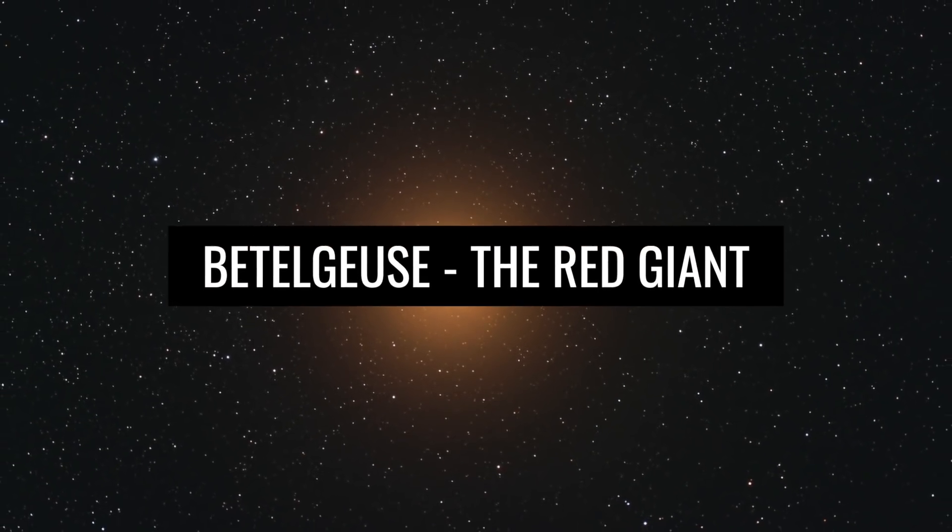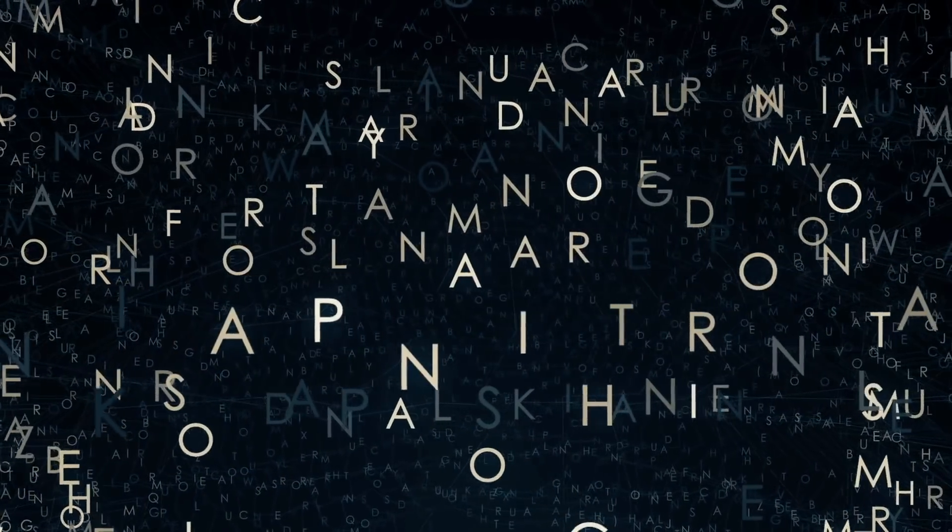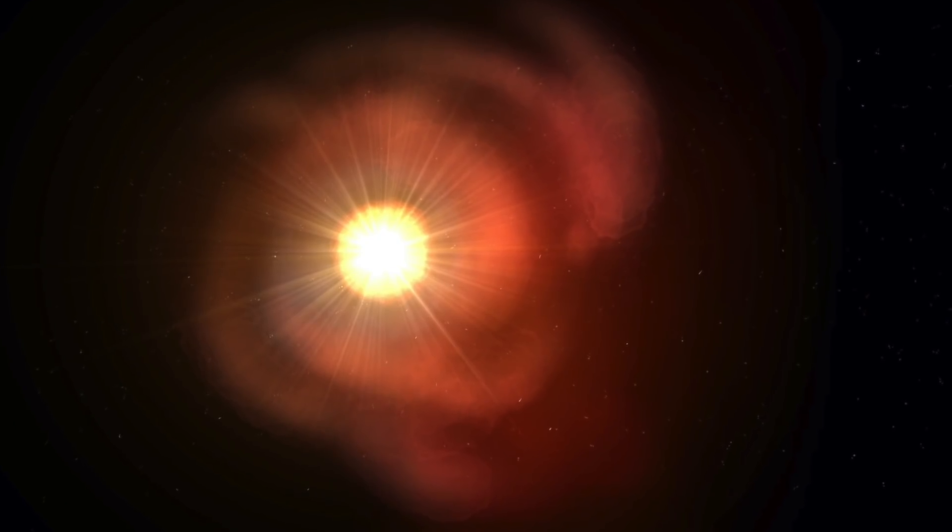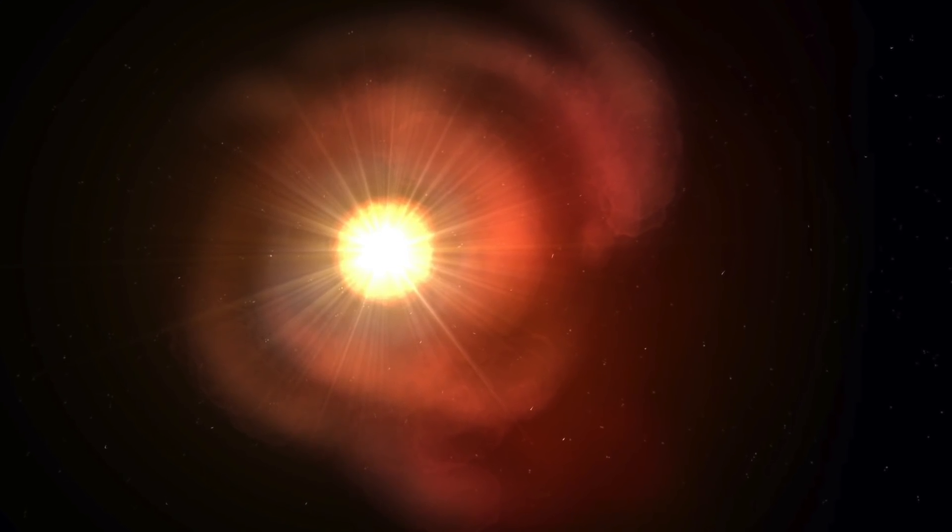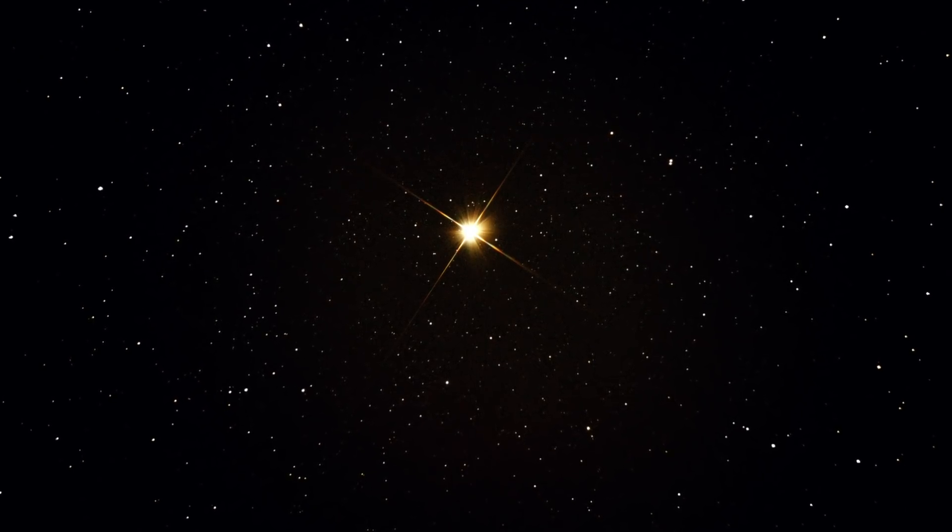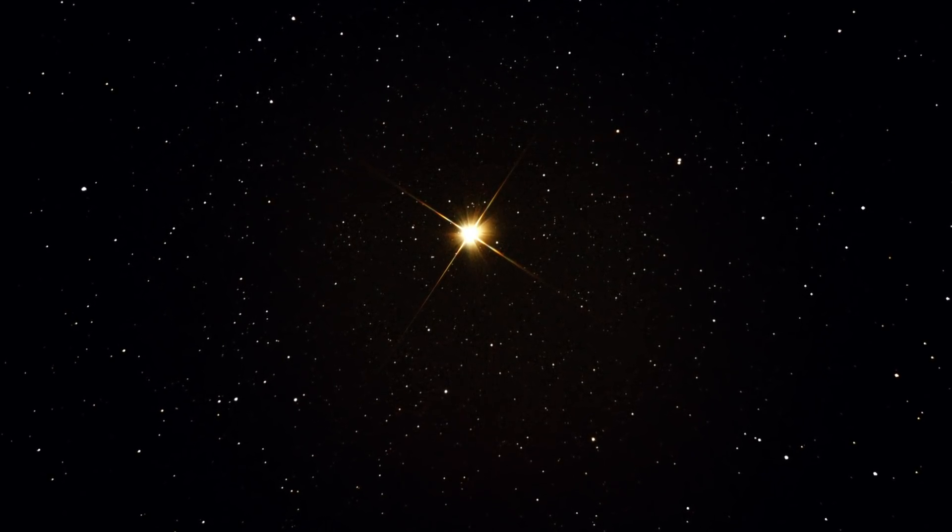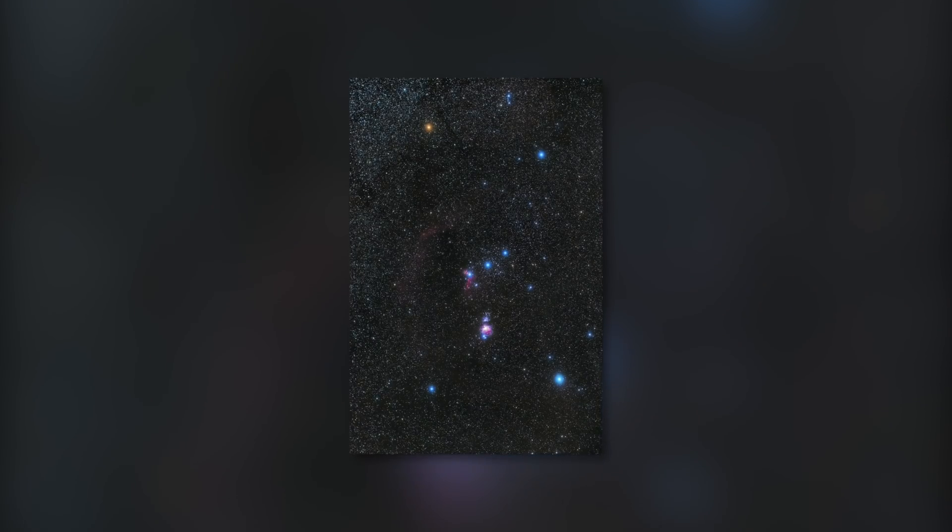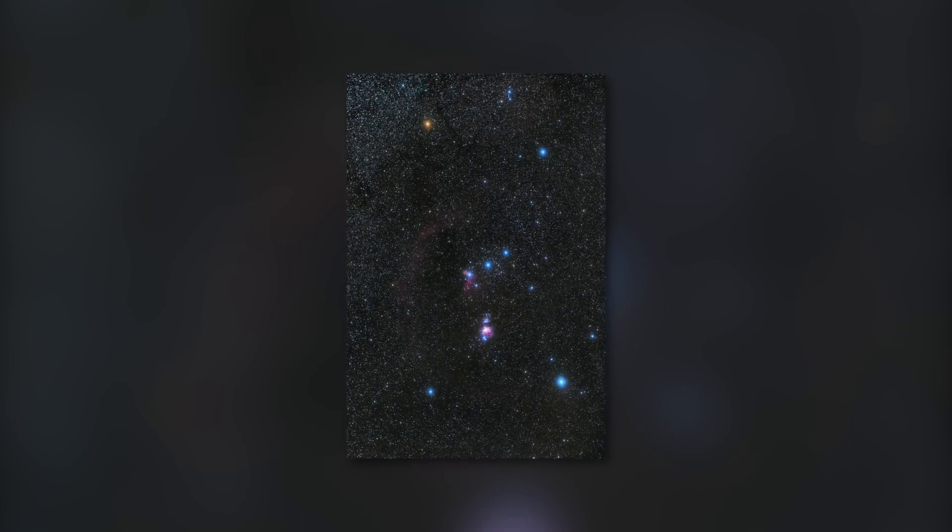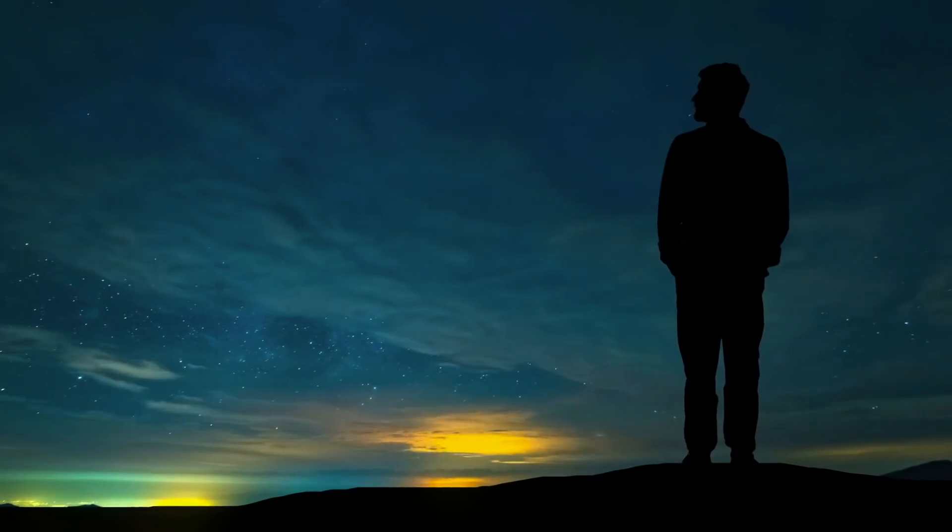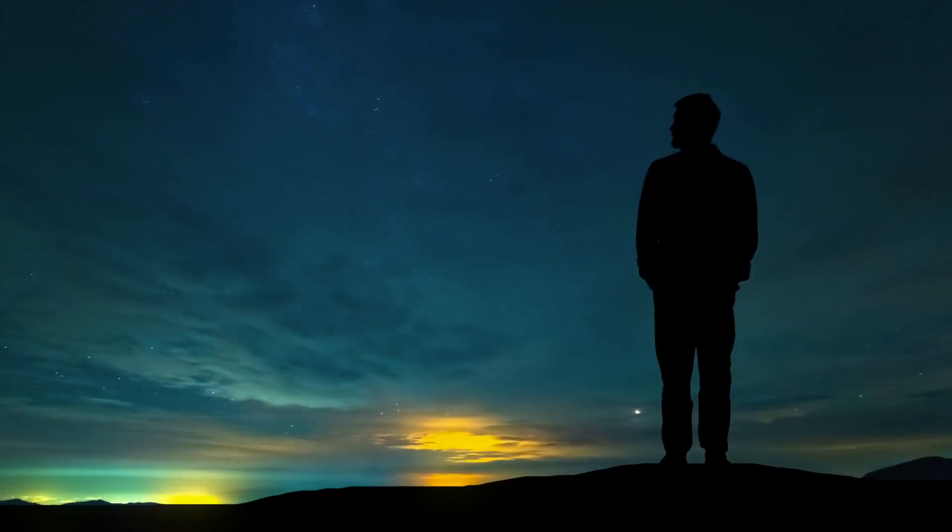Betelgeuse, the red giant. Betelgeuse comes from Arabic and means hand of the giant. Other names for this star are shoulder of Orion or Orionis. In German, the red giant is sometimes written Betelgeuse, which is due to a historical translation error. The gigantic dying star is one of the most beautiful astronomical phenomena in the night sky.